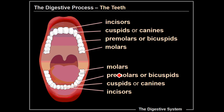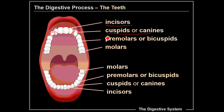Looking at where we find these teeth: the incisors are up front, and typically as children these are the first ones we lose as we grow. The cuspids or canines are right next to them. In humans they're not that long, but in other meat-eating or omnivorous mammals they're more pronounced — ours are pointy but just not very long. The premolars or bicuspids are found in between, and then the molars are in the back.